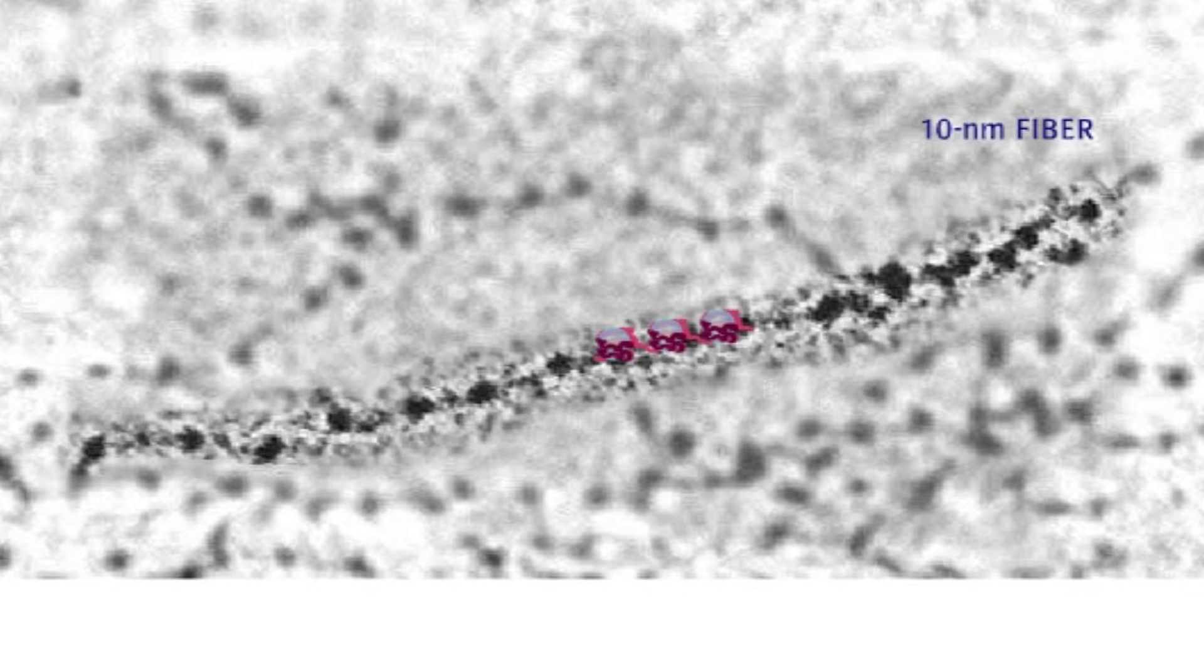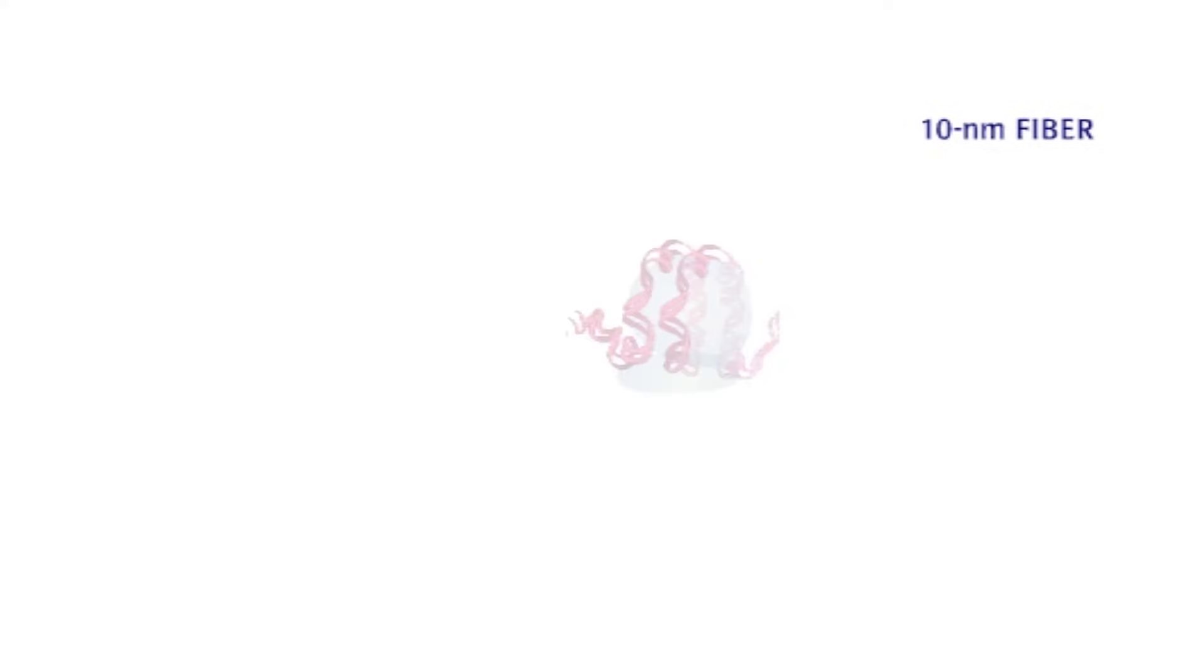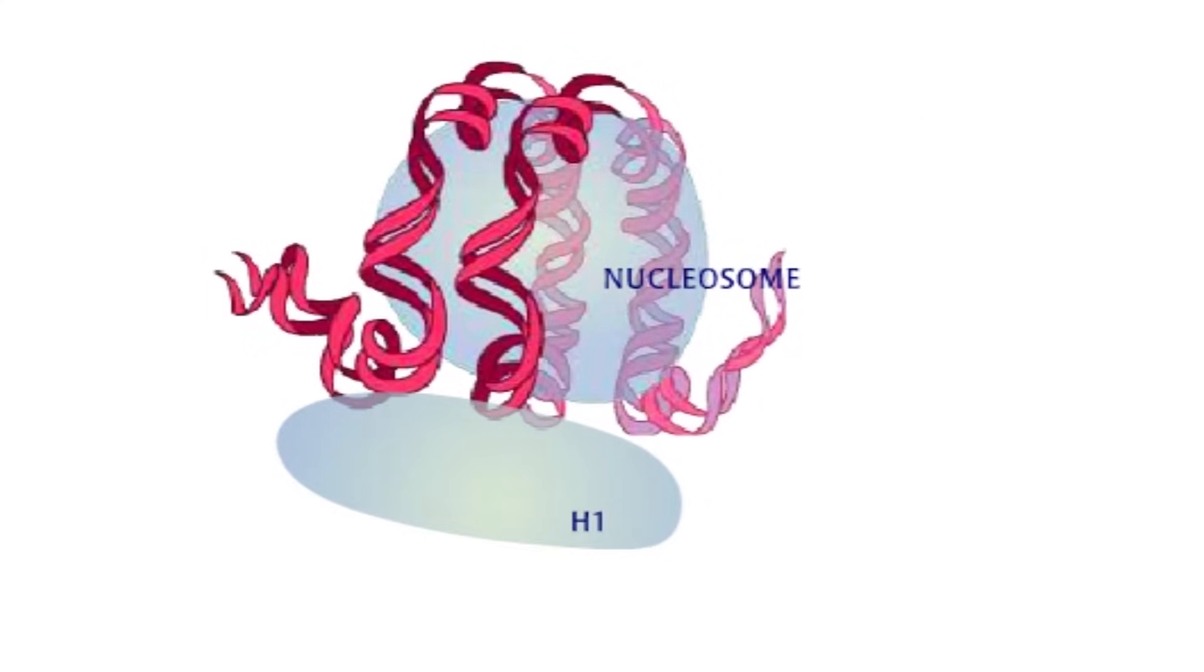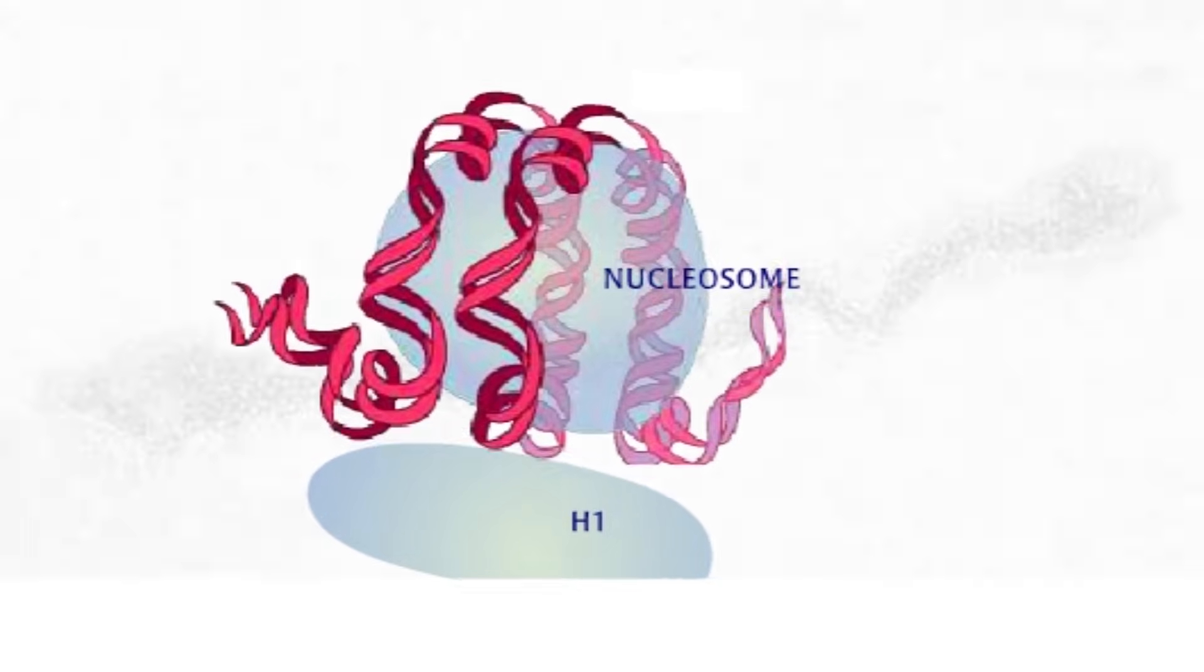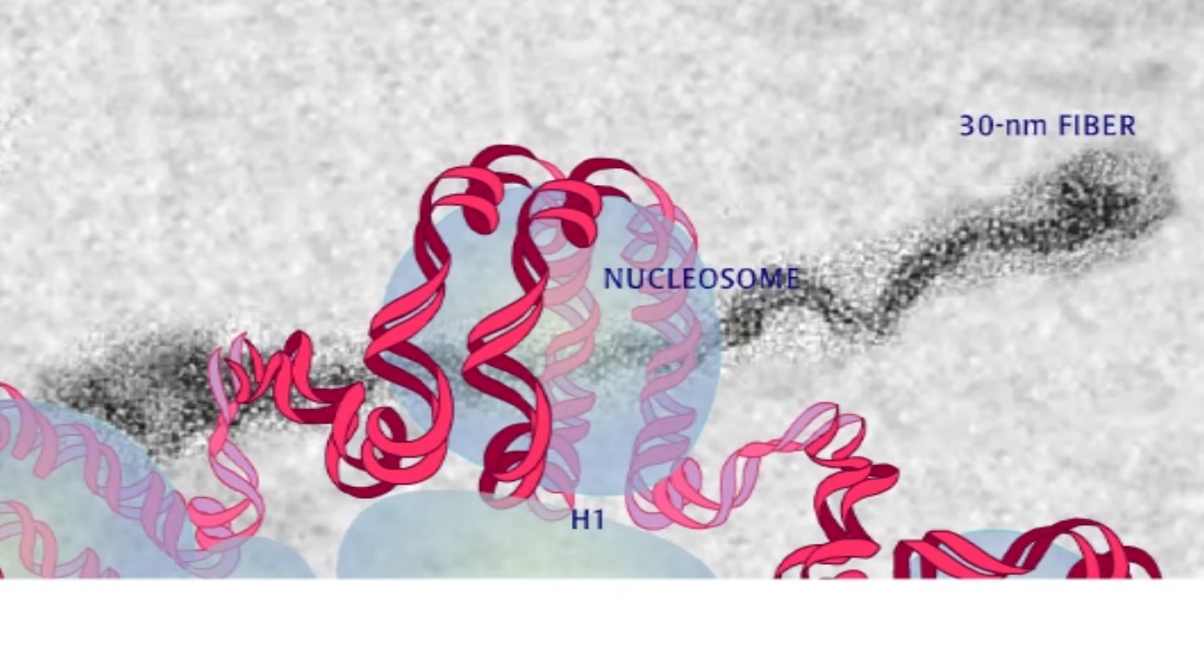It turns out that H1 histone is not part of the histone core. Instead, it binds nucleosomes to give even more structure to chromatin. H1 histone sits just outside of each nucleosome and interacts with the H1 of other nucleosomes.